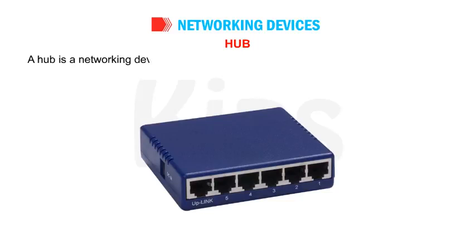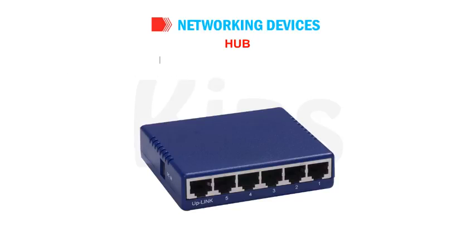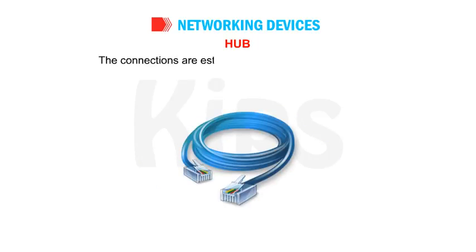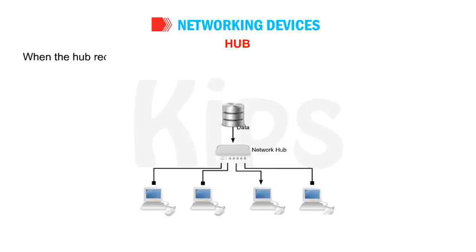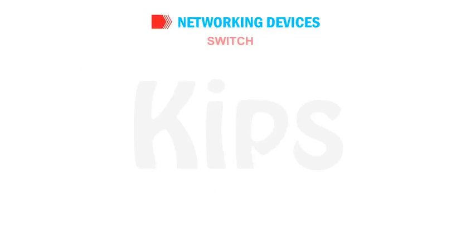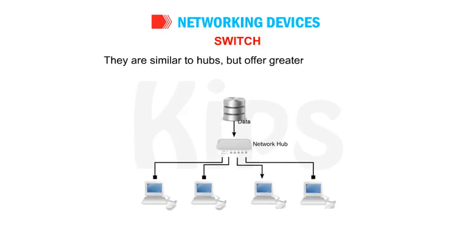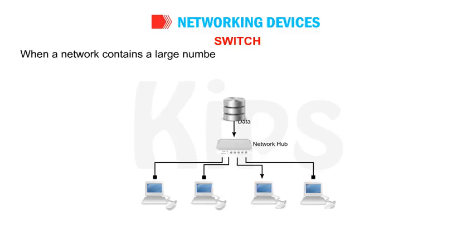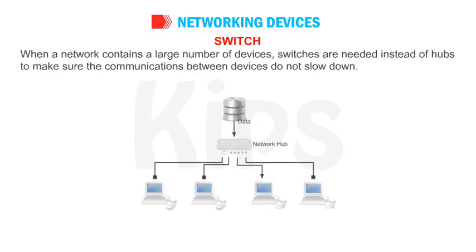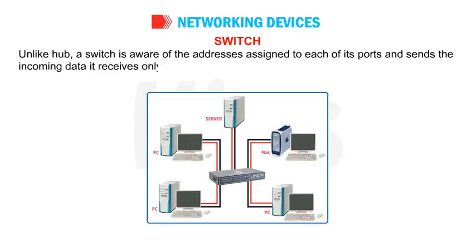Hub: A hub is a networking device used to connect multiple computers and computing devices directly to the network using cables. Each connection is called a port. When the hub receives data at one of its ports, it distributes the data to all other ports in the network. Switch: Switches contain many ports to connect different network segments and are similar to hubs but offer greater performance. When a network contains a large number of devices, switches are needed instead of hubs. Unlike a hub, a switch is aware of the addresses assigned to each of its ports and sends incoming data only to the correct port.